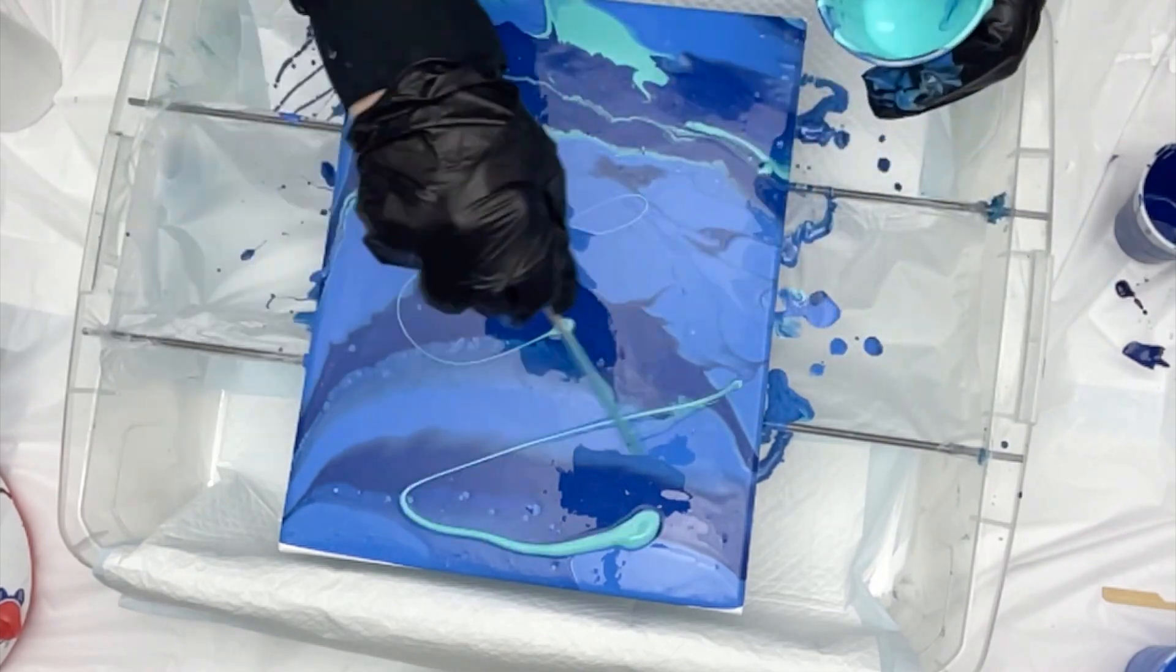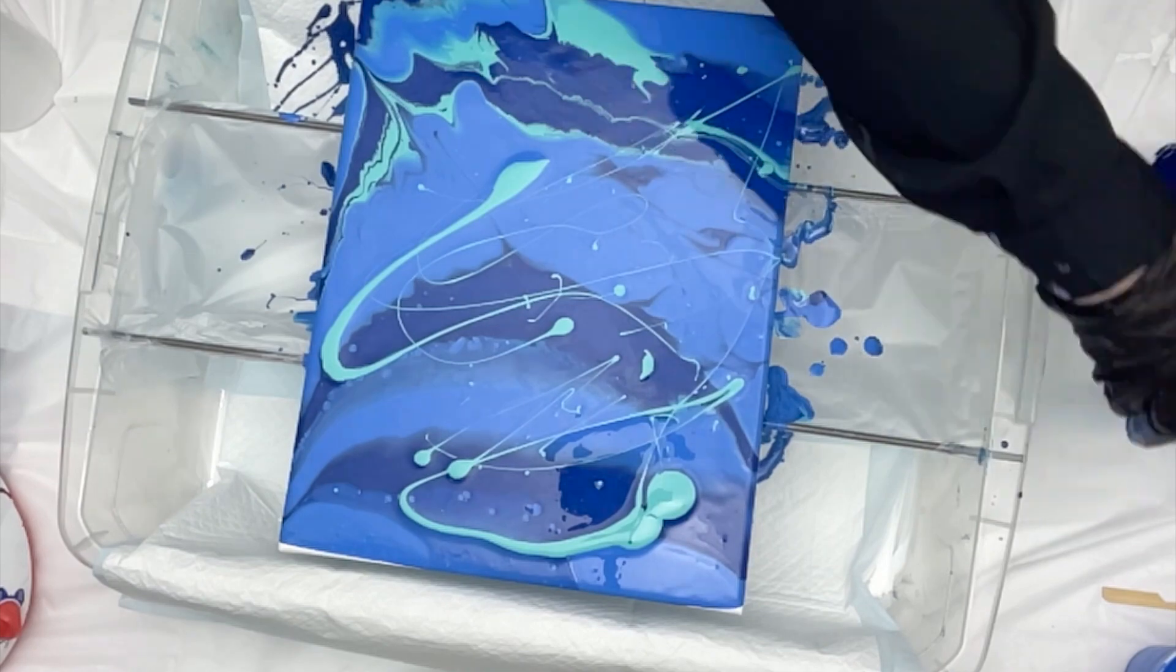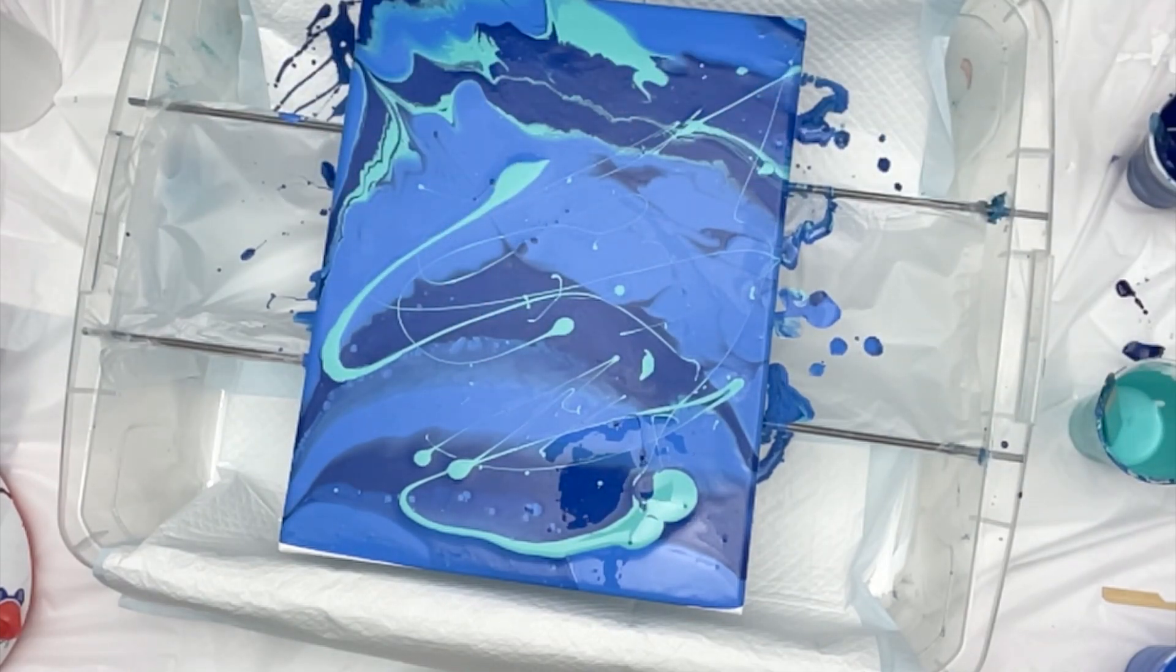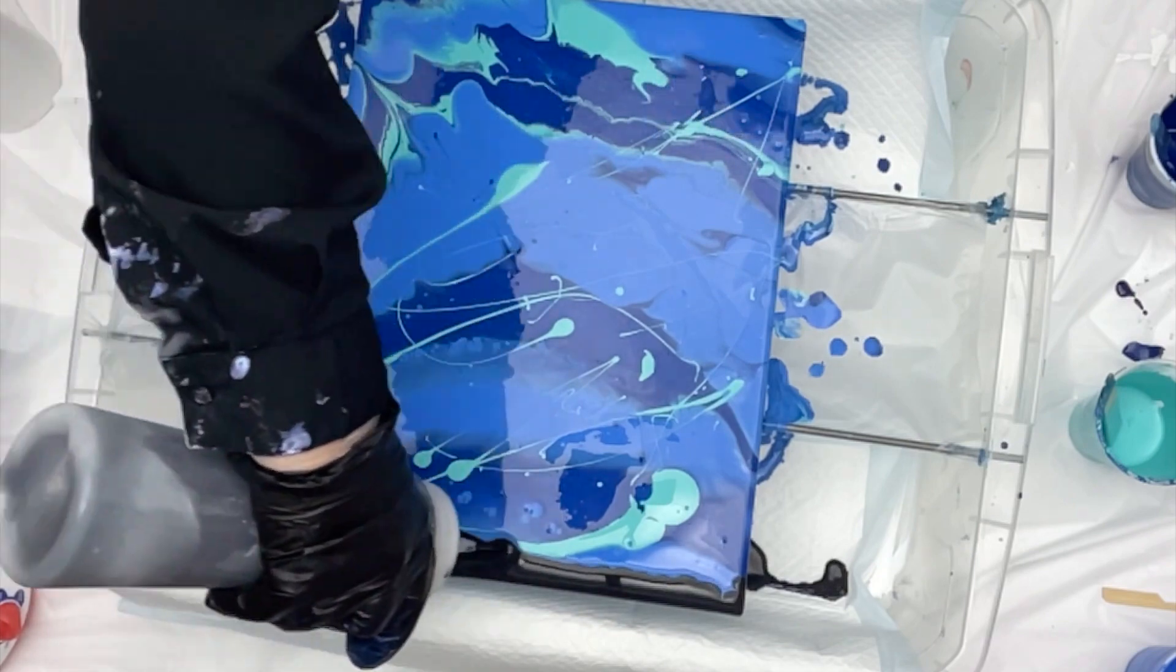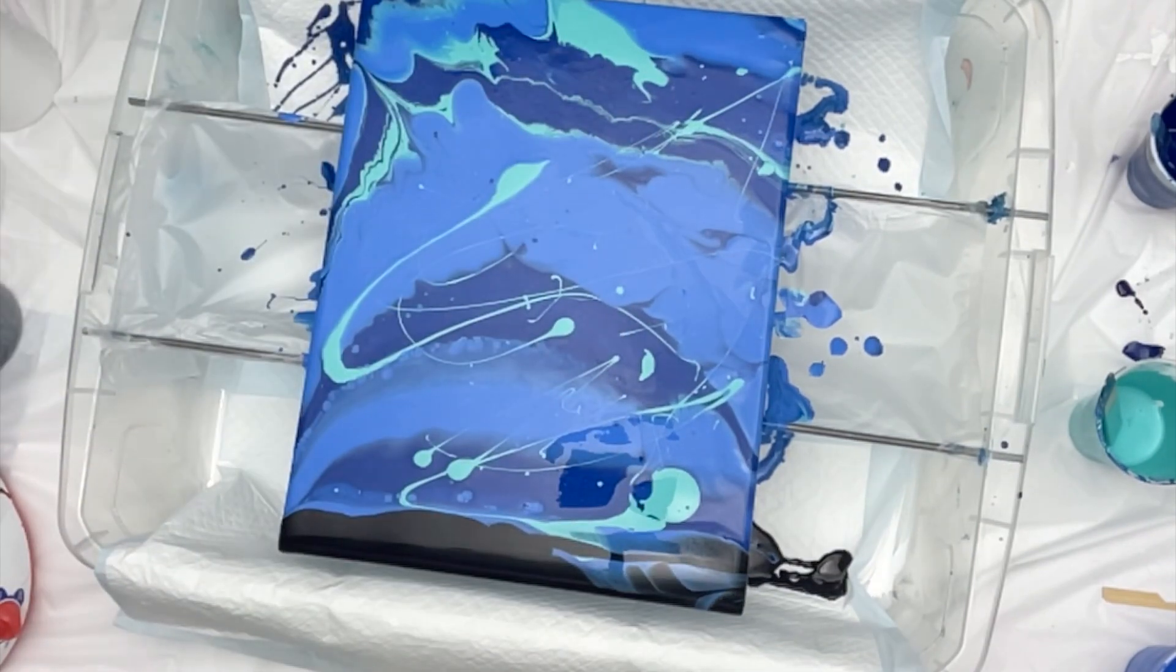The other two paints are mixed with Floetrol and water, so you're going to have two and a half parts Floetrol, one part paint, and probably a half a part water. And I'm also swiping with a cell activator.